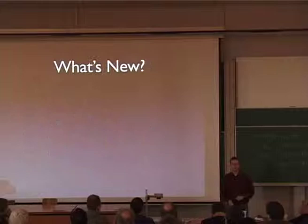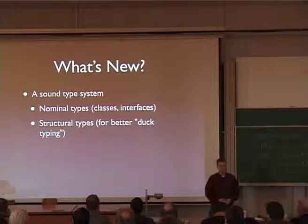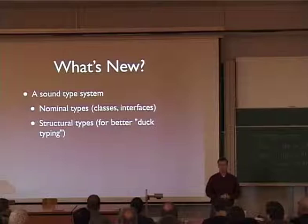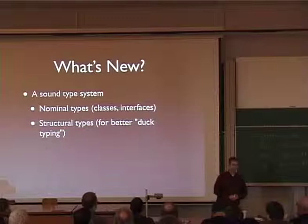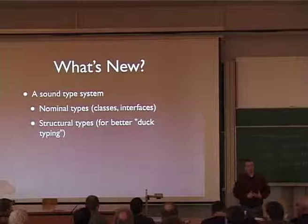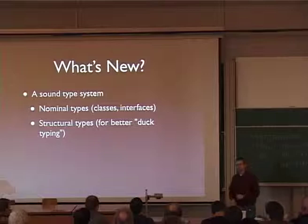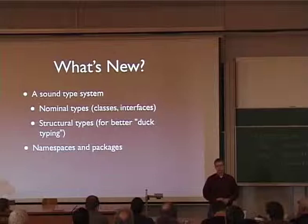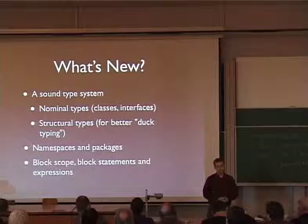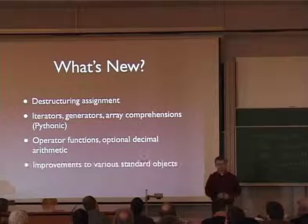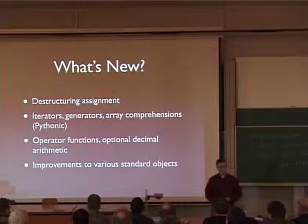I'll take you through a tour of some of the big parts of JavaScript 2. First is typing. JavaScript as it is now is mostly an untyped language. What we're adding in JavaScript 2 is the ability to do type annotations — to get better invariants at runtime, to make sure you can program with contracts, to make sure you can write functions that expect certain values checked by the system rather than by you. In order to allow you to build large applications suitable for the web, we're adding namespaces and packages. Some features like destructuring assignment, iterators, and generators are already implemented from JavaScript 1.7. And there are also operator functions and improvements to the basic objects.